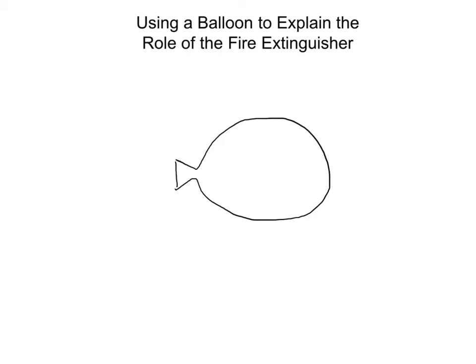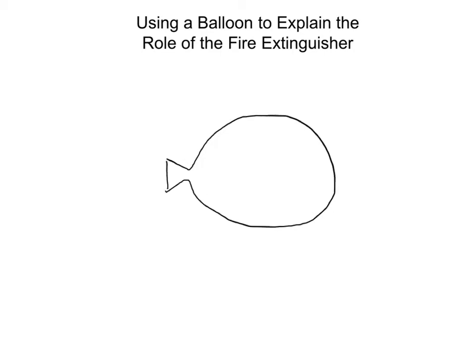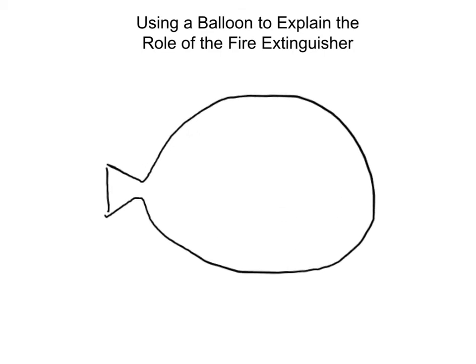Now in order to understand WALL-E's motion from a physical standpoint, we need to understand what forces were applied on him. We know that when he turned on the fire extinguisher it caused him to change his motion. In order to understand this, let's think of a balloon first. When we blow up a balloon, we see it's expanding because we're putting air into it.